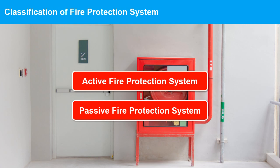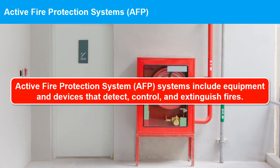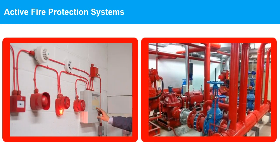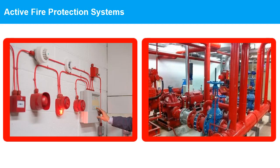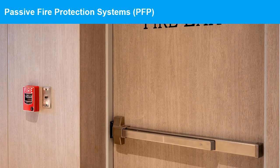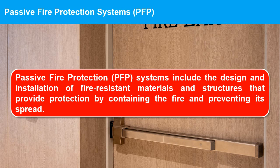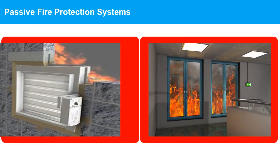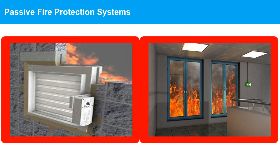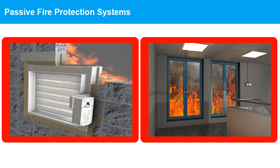Fire protection systems can be classified into two main categories: active fire protection (AFP) and passive fire protection. AFP systems include equipment and devices that detect, control, and extinguish fires; these systems require an action to activate them. Examples include fire sprinkler systems, fire extinguishers, fire alarm systems, and fire suppression systems. Passive fire protection systems use fire-resistant materials and structures to contain fire and prevent its spread, buying time for evacuation or firefighter response. Examples include fire-resistant walls, floors, and doors, fire-rated glass, fire retardant coatings, and fire stop systems.